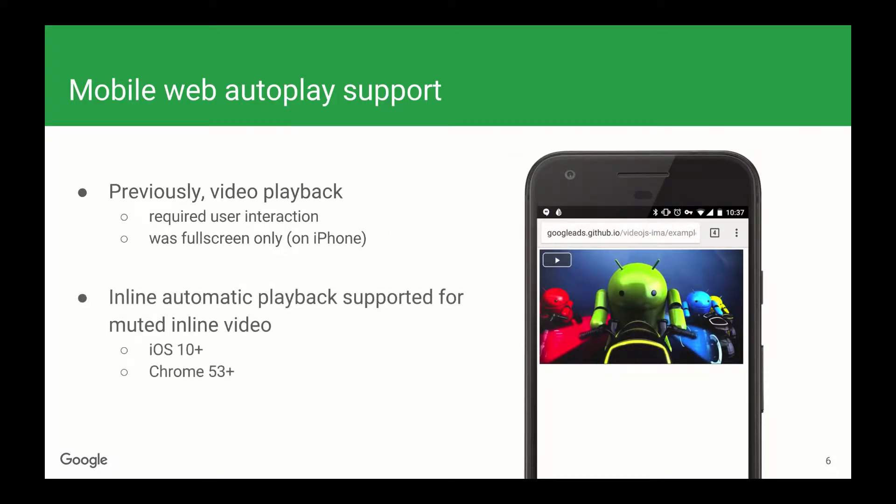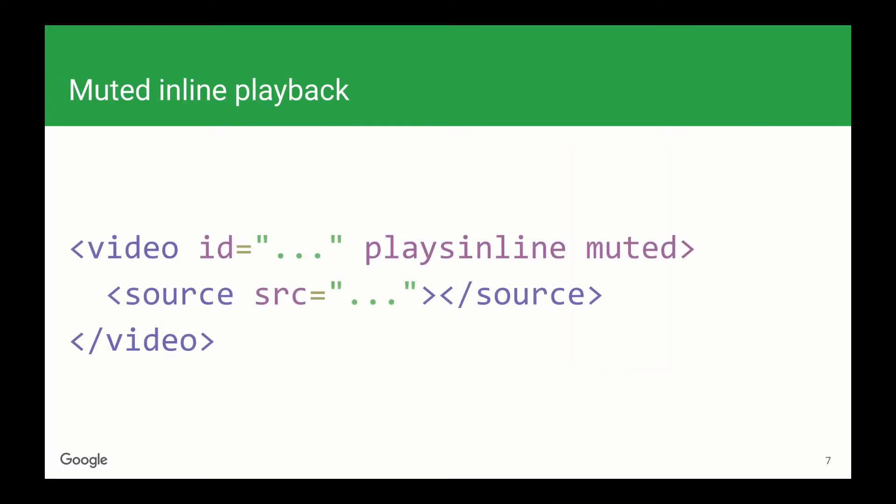So how do you enable automatic playback of video ads? To take advantage of this new support, add the plays inline and muted attributes to your content video tag. The first plays the video inline on iPhone instead of that full screen player, and the second starts the video muted, which is required for autoplay support. The IMA SDK will sync its ad player with your content player, and add these attributes to start the ad muted and inline as well.